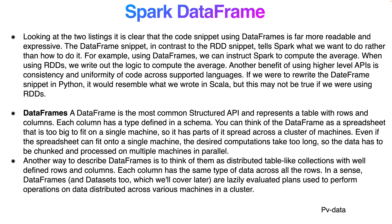Comparing these two code listings, it is clear that the DataFrame snippet is far more readable and expressive. The DataFrame snippet tells Spark what we want to do, rather than how to do it. With a DataFrame we declare 'compute the average'; with RDD we write the logic manually. Another benefit of the higher-level API is uniformity across supported languages like Python, Scala, and R.